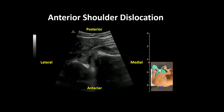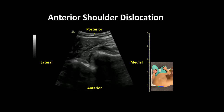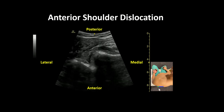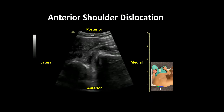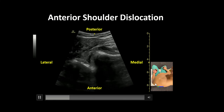The view can be obtained by either using a linear or curvilinear probe. The patient is placed in a seated position with the affected arm adducted. The probe is placed in a transverse orientation just inferior to the scapular spine with the probe marker pointed towards the humeral head.